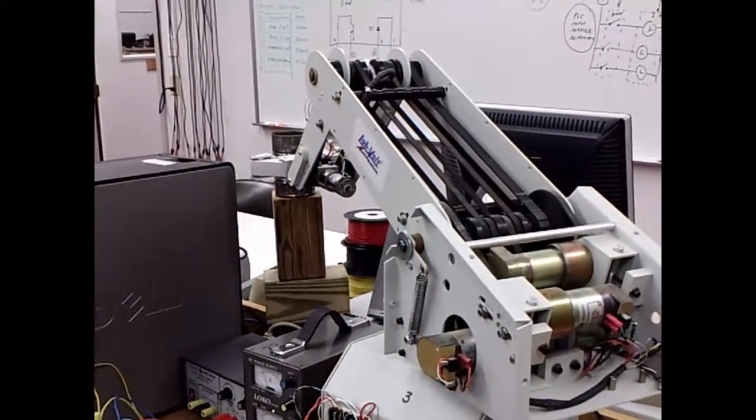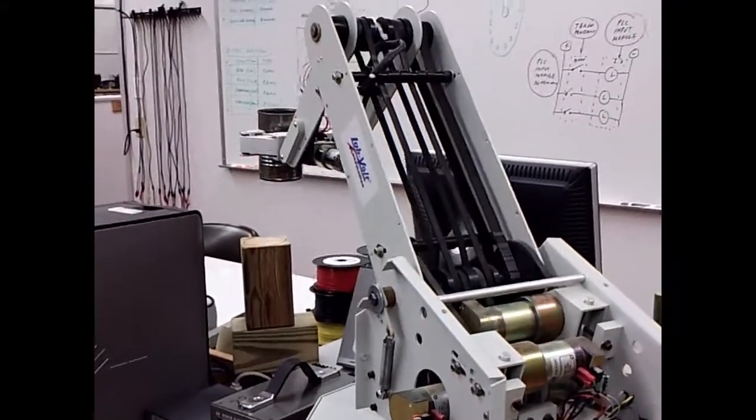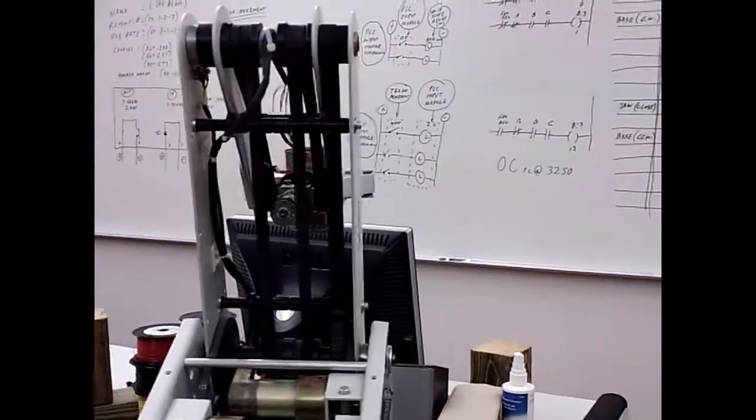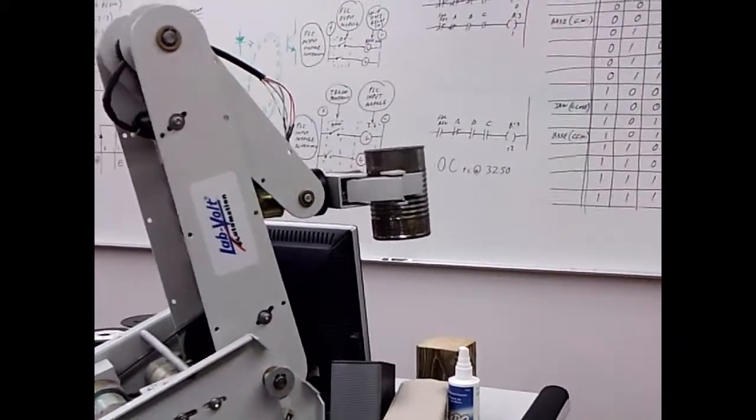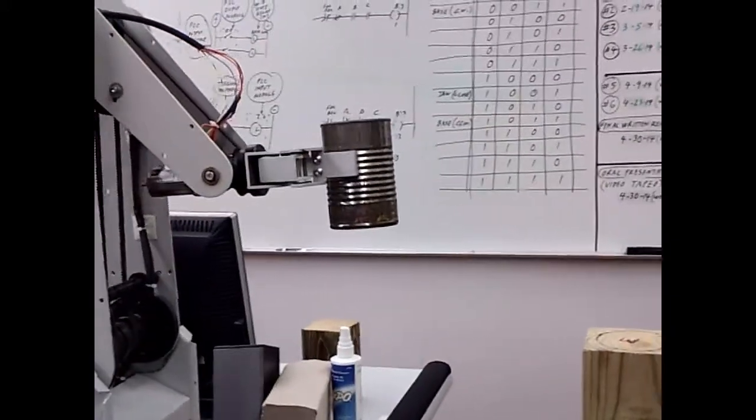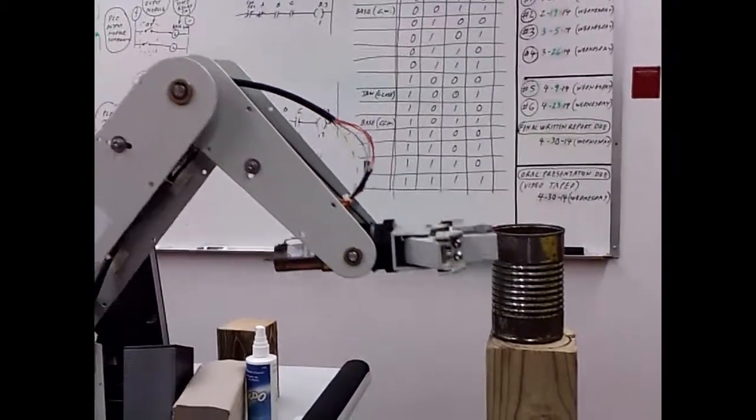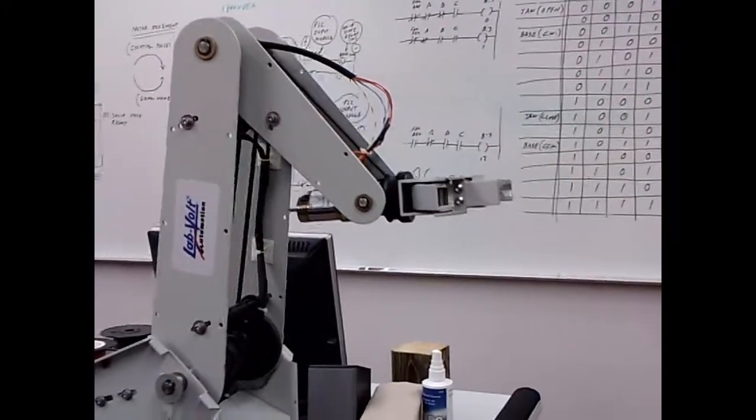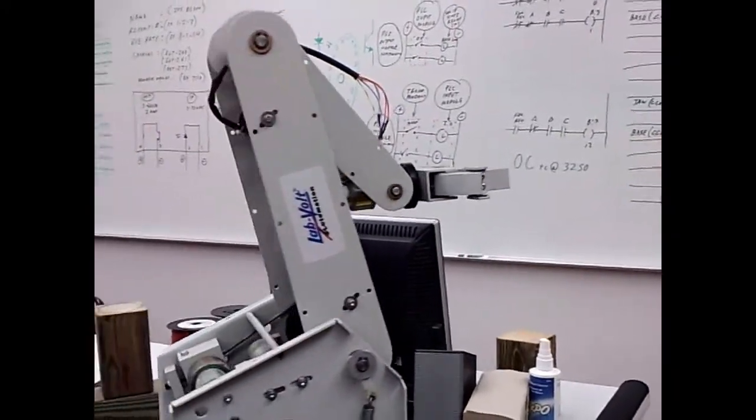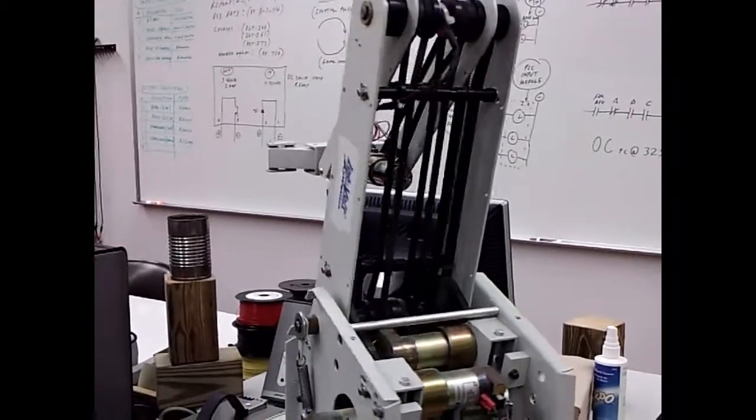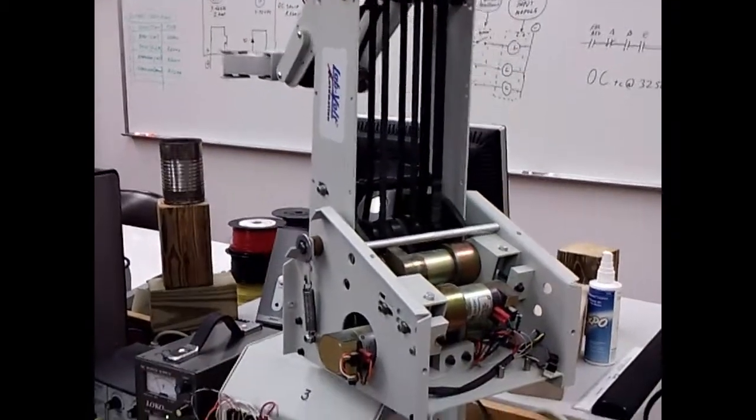All you do is just hit cycle start and it'll run through what we taught it just now. And it'll do it multiple times with accuracy because the base limit switches are resetting the counters inside the PLC.